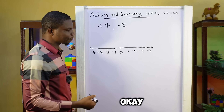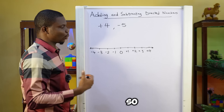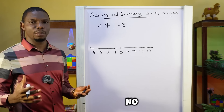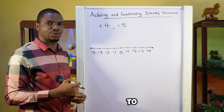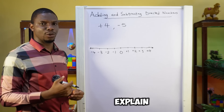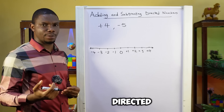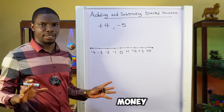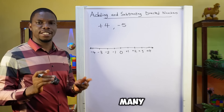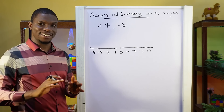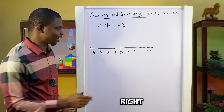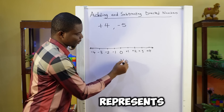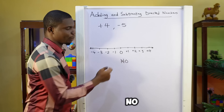So these are directed numbers, and we call this line a number line. Now let me use money to explain what directed numbers are. If someone has no money, how many naira does he have? Zero naira. So here, 0 represents no money.